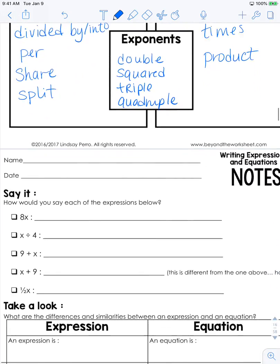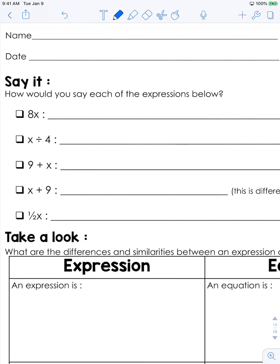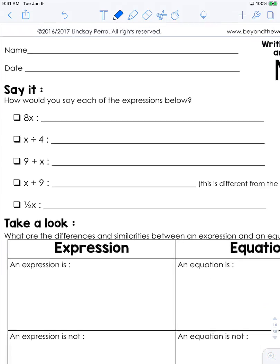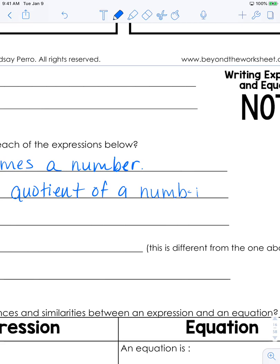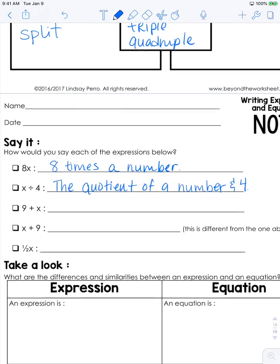So you have these terms, and now let's put them to use. Each of these is a variable. So how would you say 8x? You could say 8 times x, or you could say the product of 8 and x. You could say 8 times a number - there are many different ways. Often when it's a variable, we do say 'a number,' we don't just say x. This next one here, you could say the quotient of a number and 4, or you could say a number divided by 4.